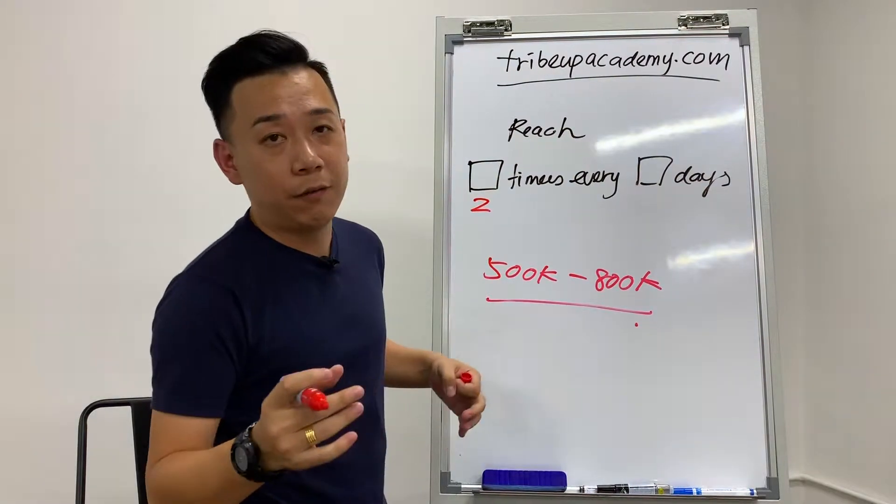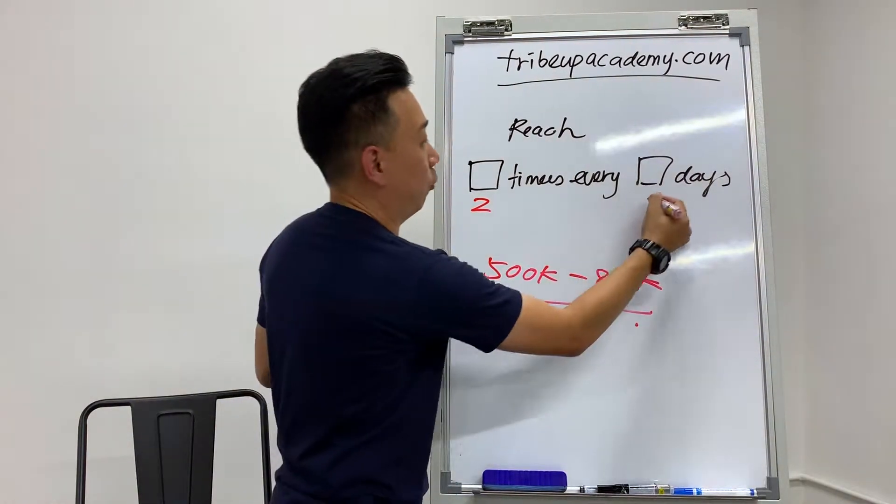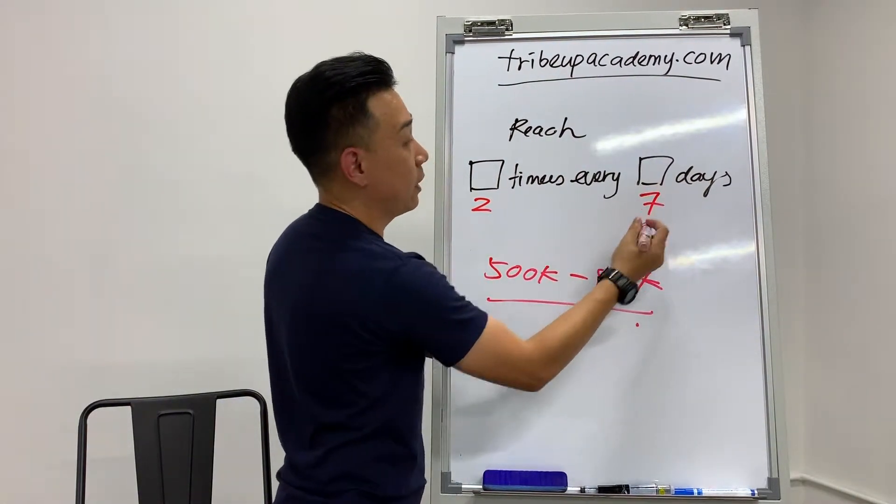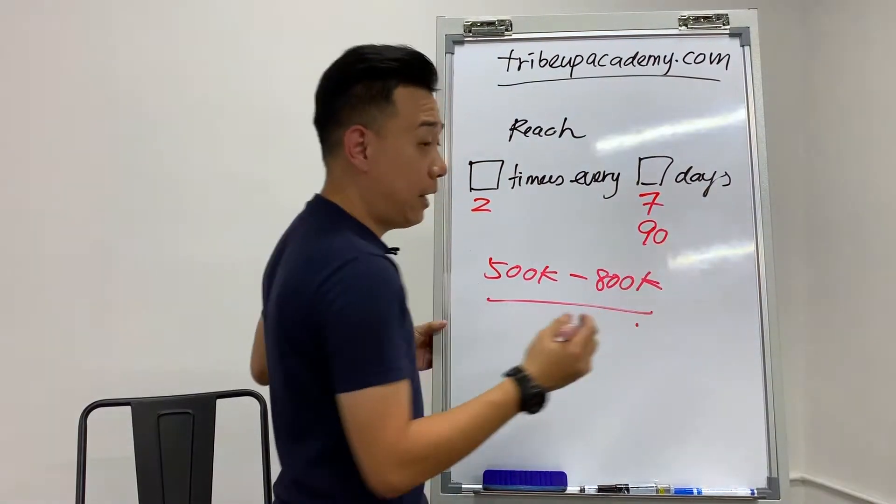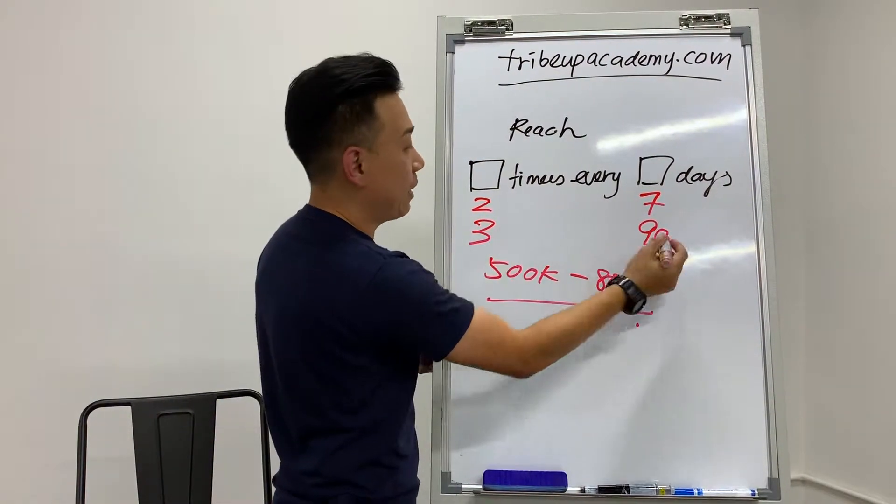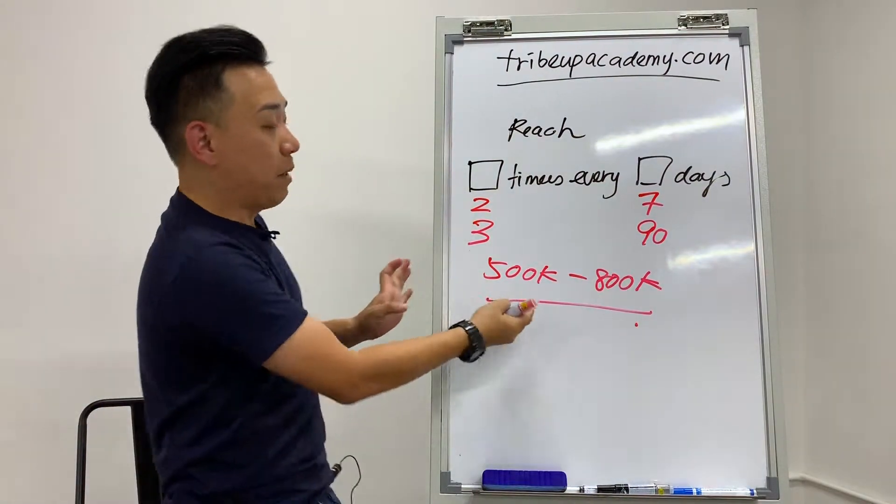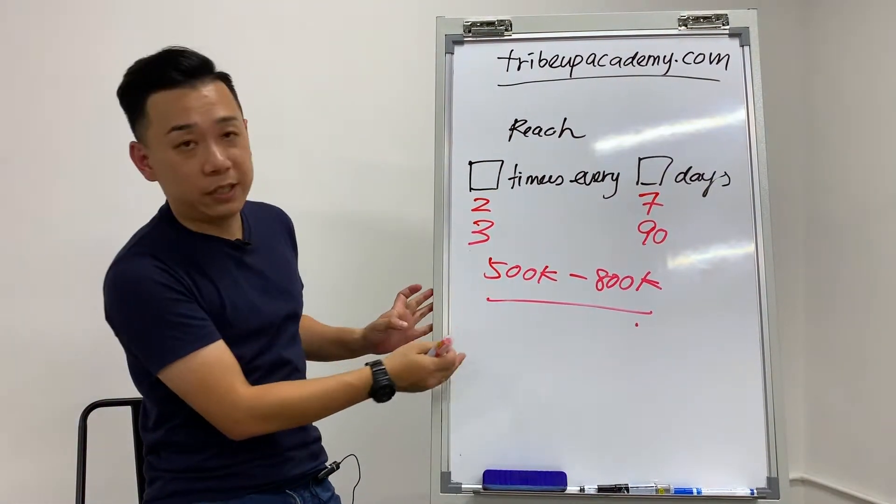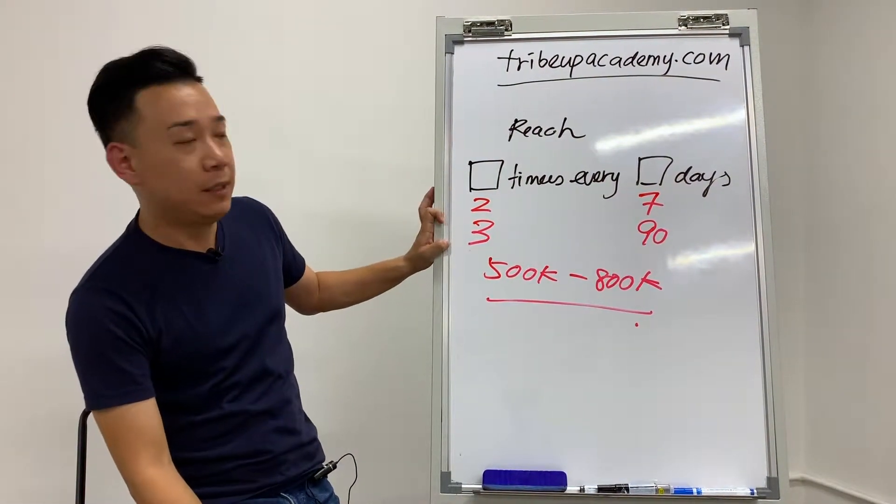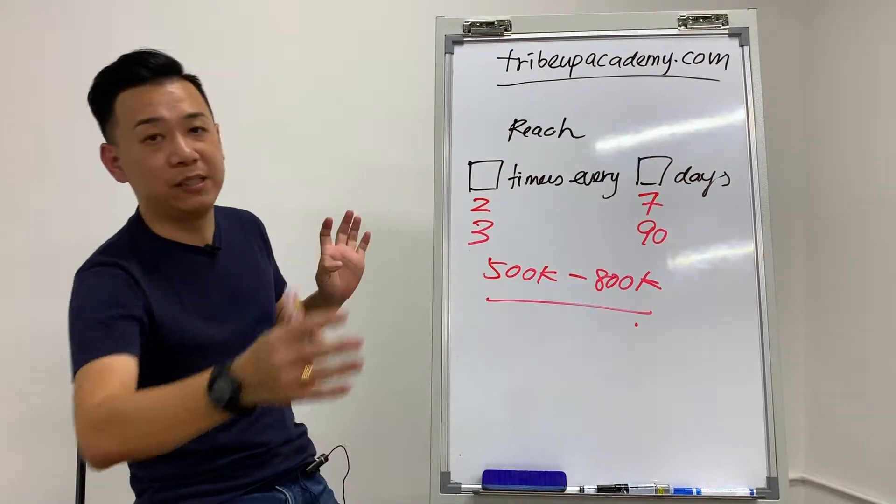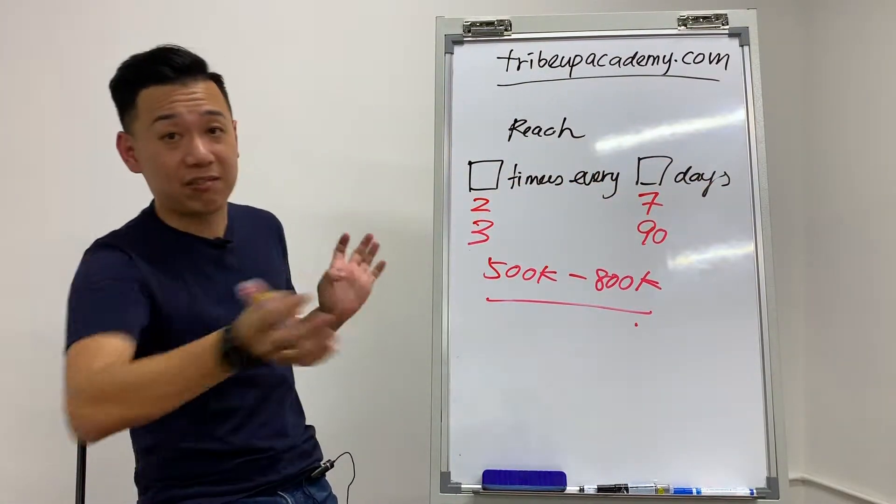If you use reach objective, what you can do is you can control how many times. For example, Facebook says that in order to optimize for people to remember your ads, you need to show two times every seven days. The number of days can go up to 90 days, meaning if you do three every 90 days, this group of people will only see your advertisement up to three times in the 90 days period. This is the longest that you can stretch, which is 90.